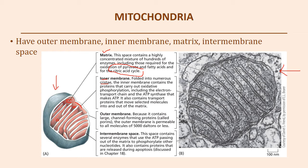The inner membrane contains the proteins that carry out oxidative phosphorylation — your ATP synthase is embedded within the inner membrane, as well as all proteins required for the electron transport chain. The inner mitochondrial membrane is the location for your electron transport chain, essential for increasing ATP production in cellular respiration. Within the inner mitochondrial membrane there are also transport proteins that allow certain molecules to enter the mitochondria.